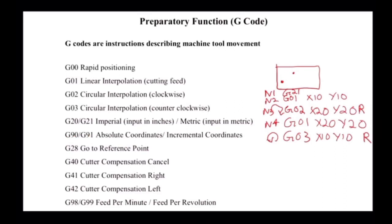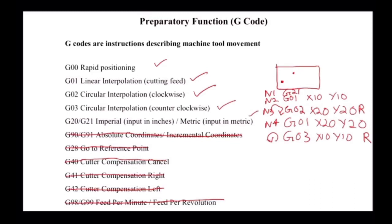G90 and G91 are not required for us — you don't need to worry about these for the exam or for any typical job. G28 is also not necessary to memorize. G40, G41, and G42 are also not required. The commands you need to memorize are: G01, G02, G03, and G21. G00 is optional — it is similar to G28, used to go back to origin, but you don't need it for most work. These four G-code commands you must know.